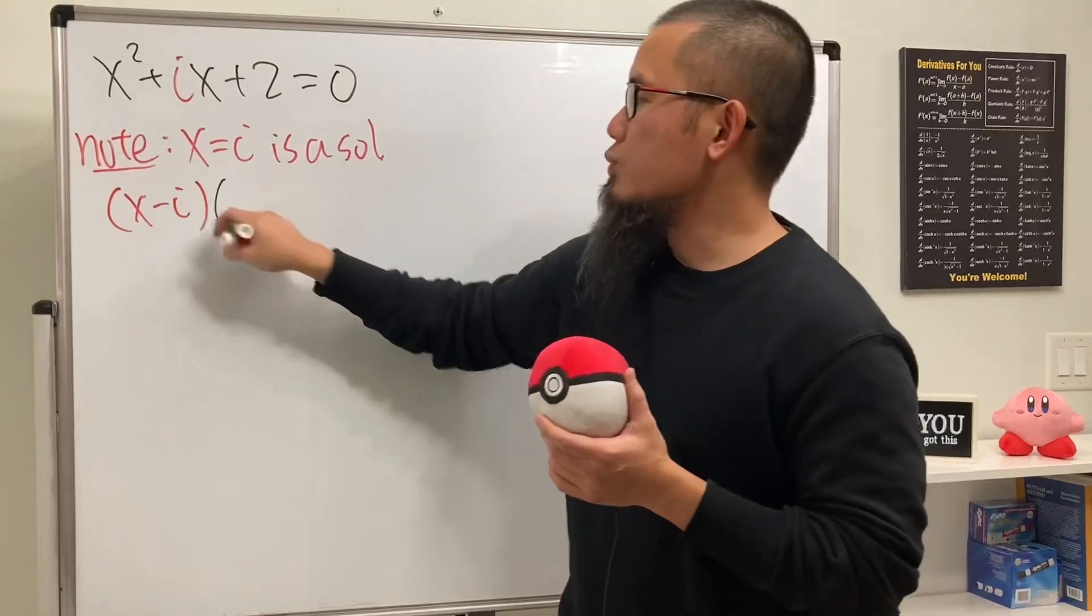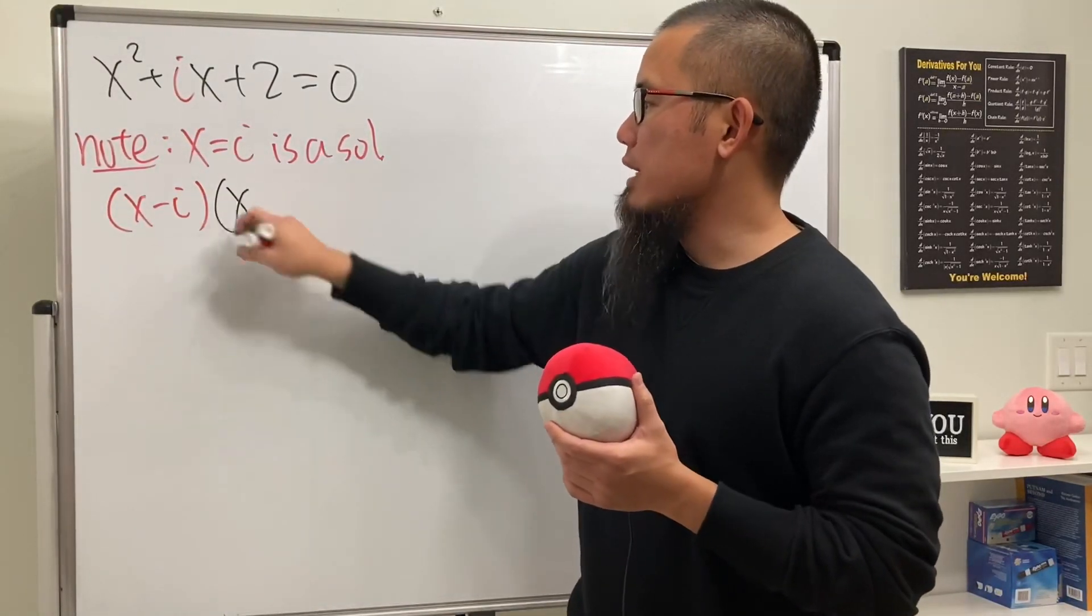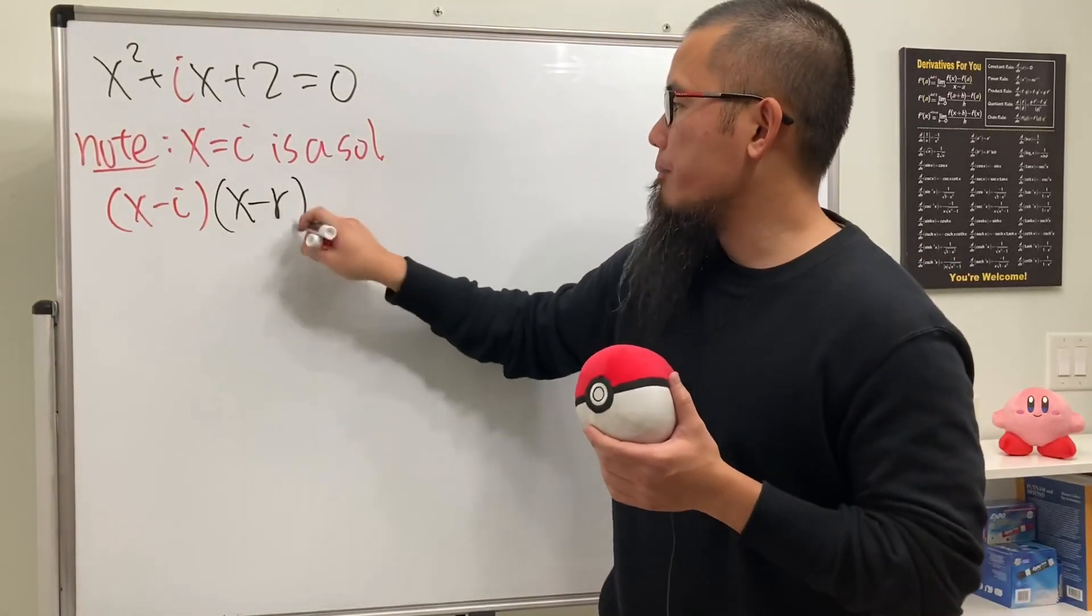And then for the second factor, because we have x squared right here only, here's x already. So of course you just need x. And then the other root we don't know. Let's just write down minus r.